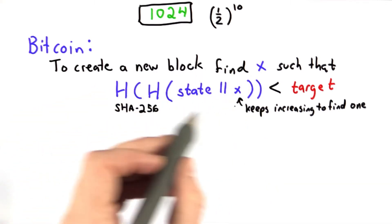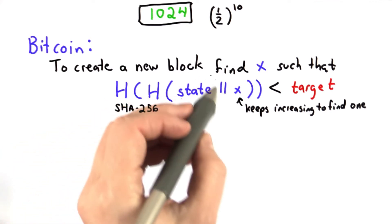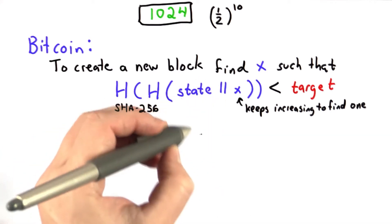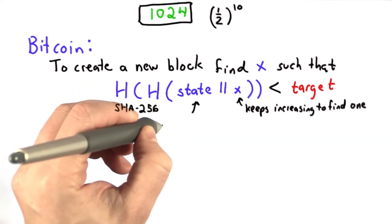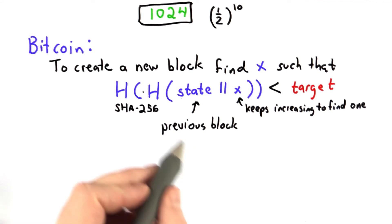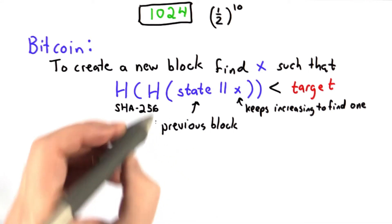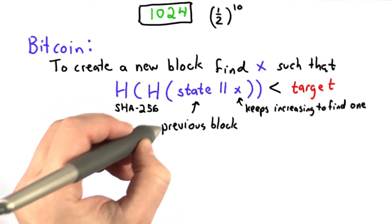You've got to find a value where the hash of the hash of the state concatenated with that value, and the state does two important things. It includes information about the previous block. So this is how the timestamps form a chain - the state must include the previous block.